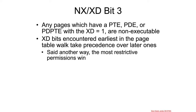When it comes to what takes precedence, if you ever see a PTE, PDE, or PD-PTE with the XD bit set to 1, that means the subsequent memory is going to be non-executable. As the MMU is walking through the page tables, it is the first XD bit encountered which takes precedence over all subsequent ones. In other words, the permissions will be the most restrictive possible.